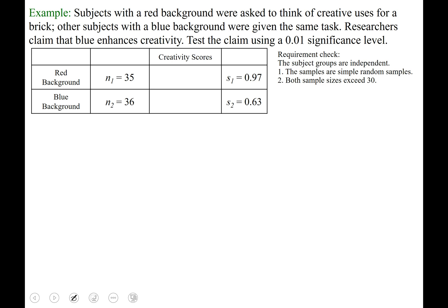So the group with red backgrounds, there were 35 of them. The group with blue backgrounds, there were 36 of them. They were given this brick against some background and were given some creativity score. The average creativity score for population 1 was 3.39 and for population 2 was 3.97. So the creativity score for the red background is lower than the creativity score for the blue background. We have a sample standard deviation of 0.97 for pop 1 and 0.63 for pop 2. Our requirements are met because our samples are both over 30, simple random sample, two independent groups.